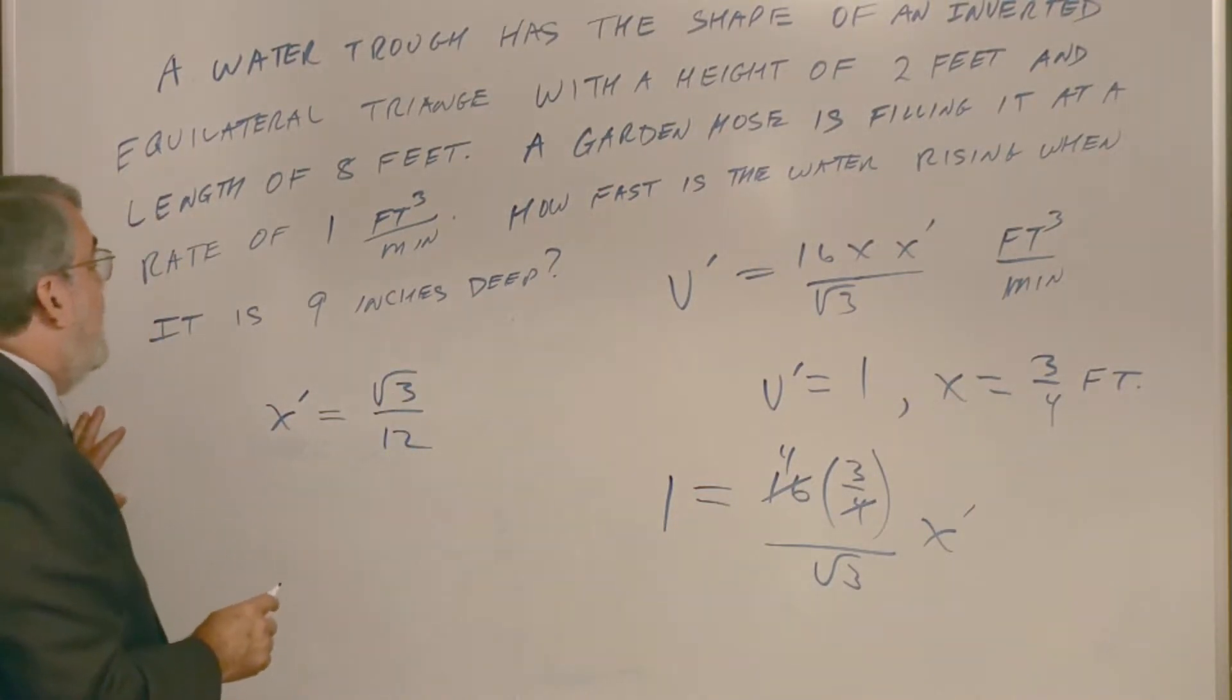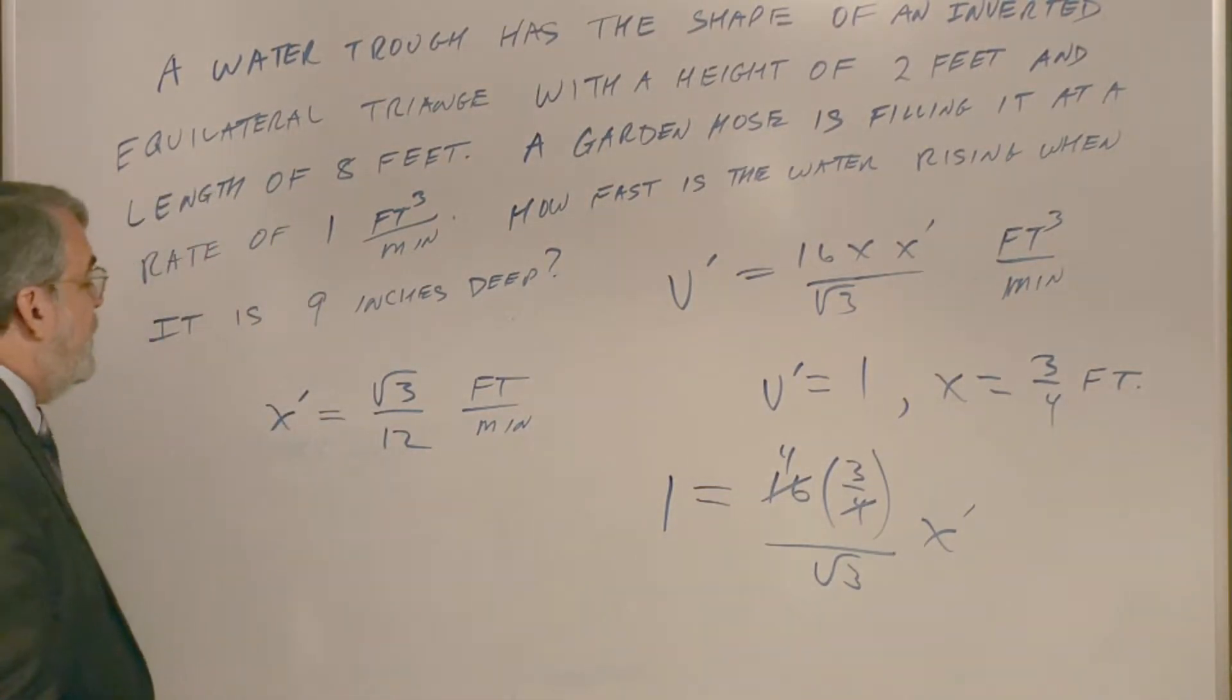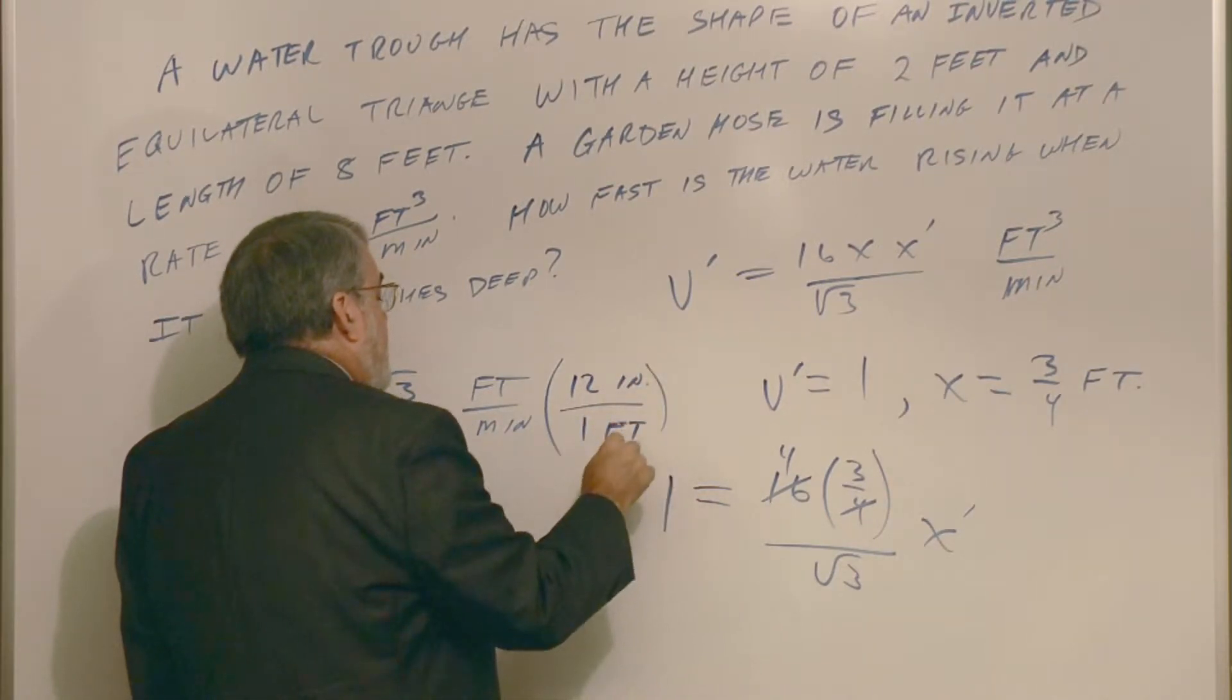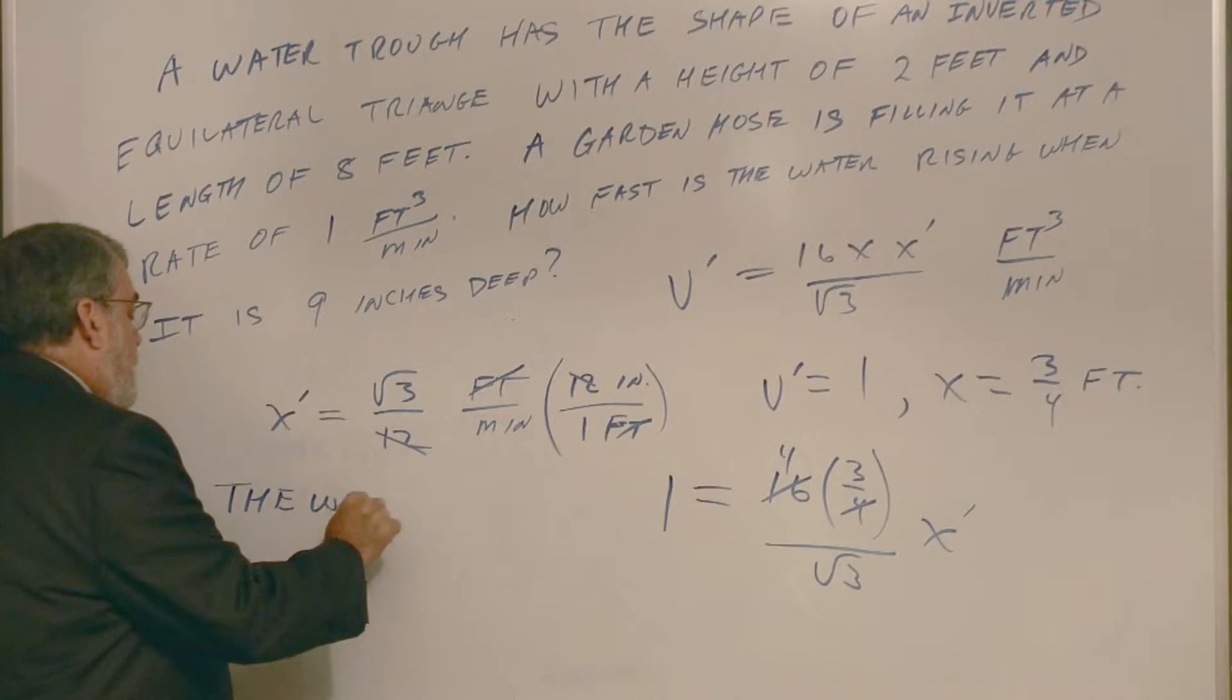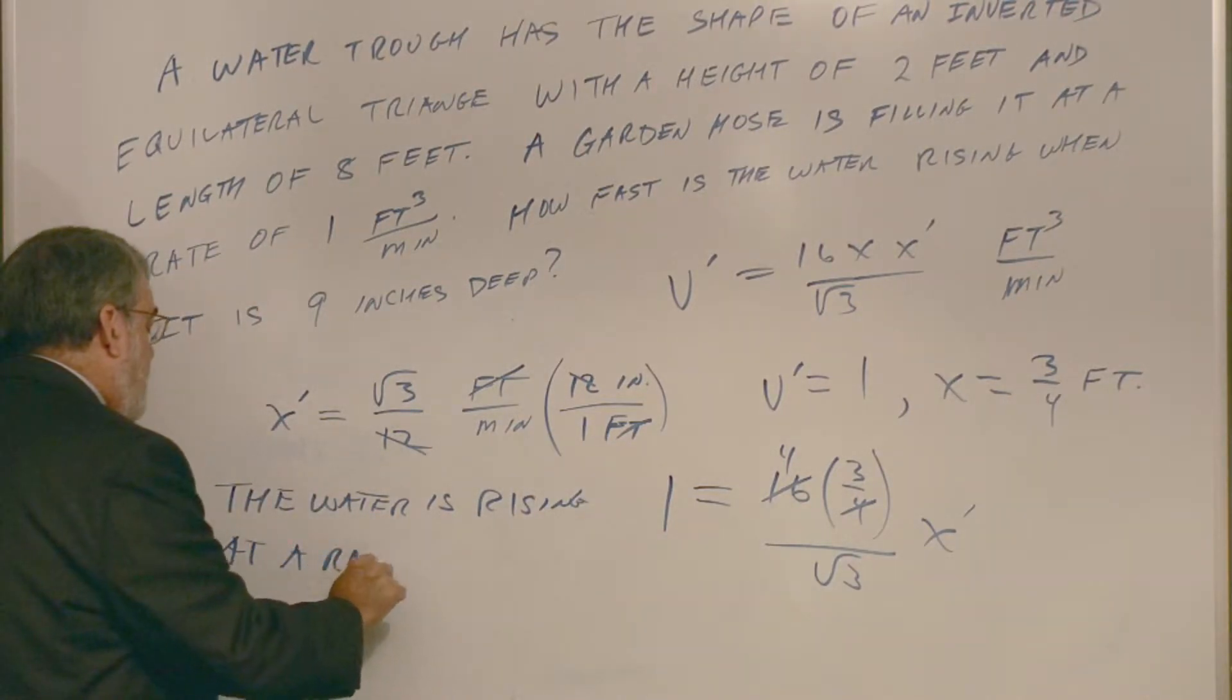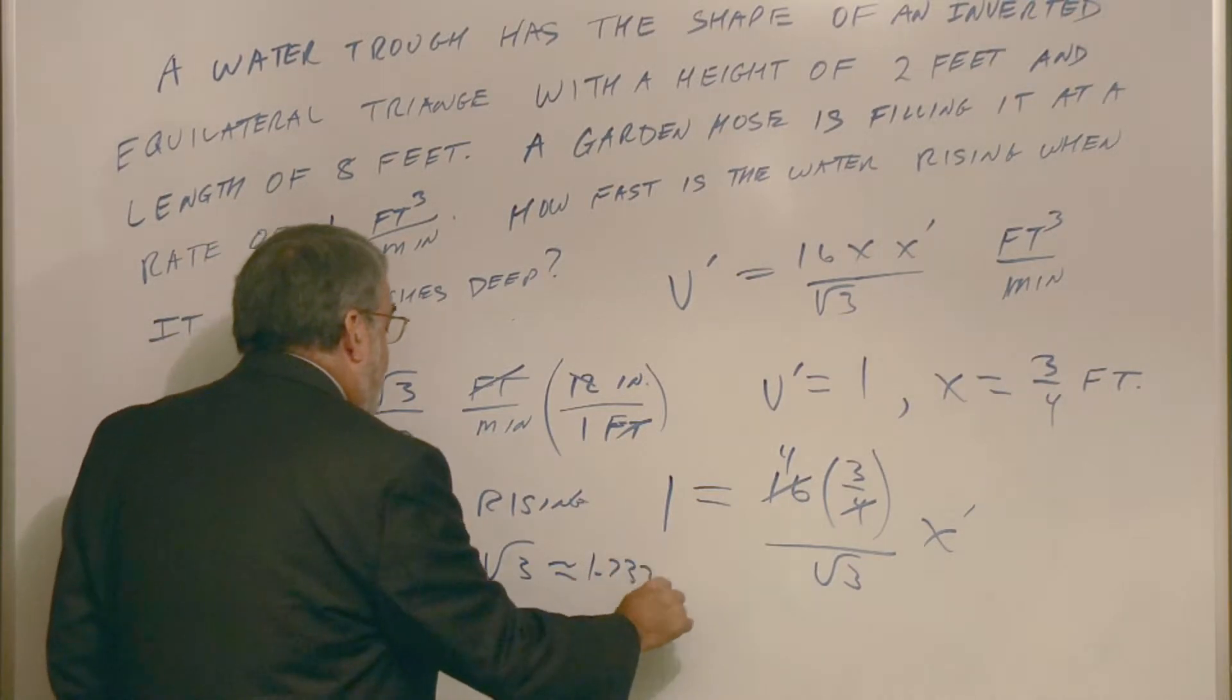All right. So the water is rising. Now this is in feet per minute. Do we want to answer in feet per minute or inches per minute? And I didn't specify here, did I? Let's go with inches per minute. And so if I multiply by, let me see, 12 inches is one foot to convert to units, feet cancels. And look at that, the 12 cancels. All right. So square root of three inches per minute. The water is rising. Water is rising at a rate of square root of three, approximately 1.732 inches per minute.